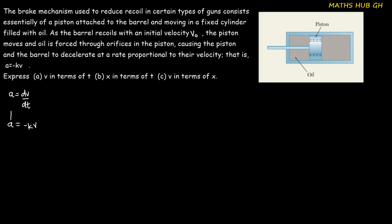We can substitute this in place of a, giving us minus kv equals dv over dt. We then group the terms: the v terms go on one side, so we have dv over v, and the dt and k terms go on the other side, giving minus k dt.